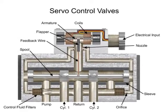Most industrial applications use feedback from electronic, linear, rotary, or force transducers. A transducer is a device that produces an electrical signal in direct relation to a position, force, or speed. These devices feed a precise position or speed indication back to an electronic controller via a feedback wire, which in turn adjusts the valve.